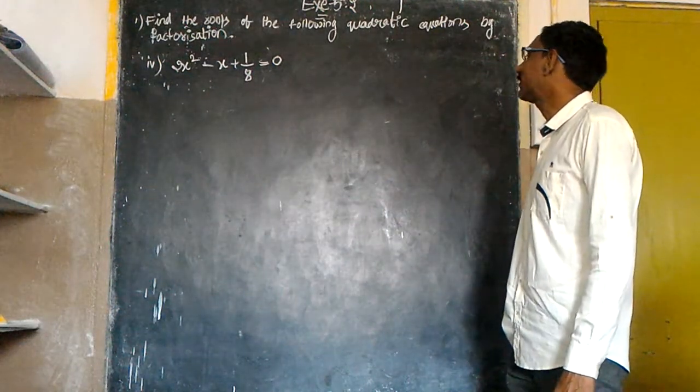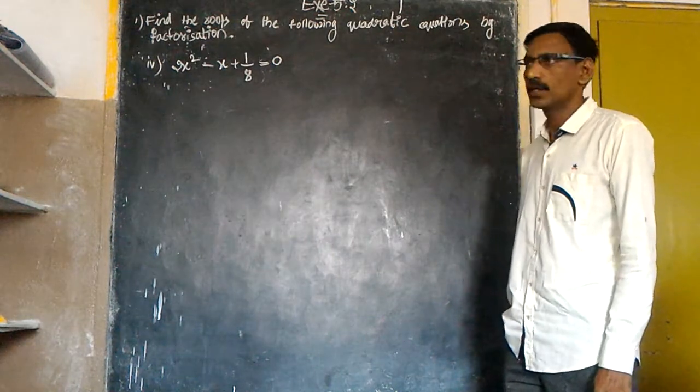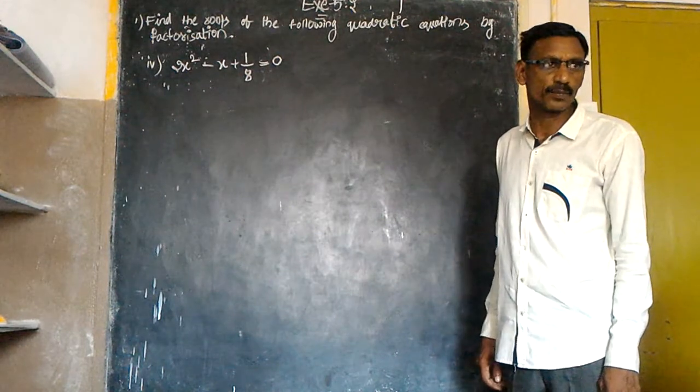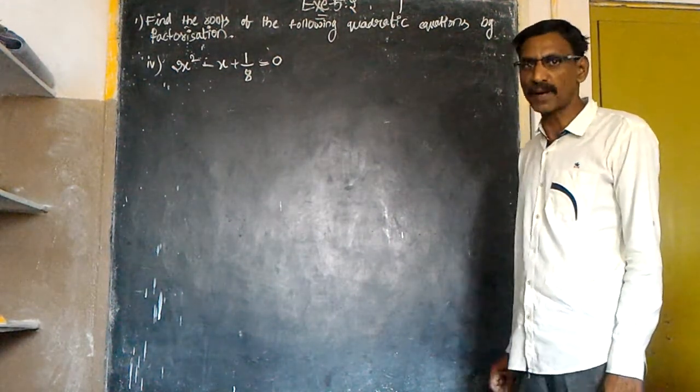Zeros of the quadratic equation by factorization. So here you have to find the zeros of the quadratic polynomial by factorization.